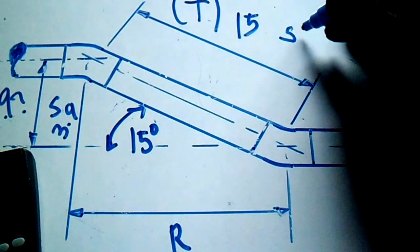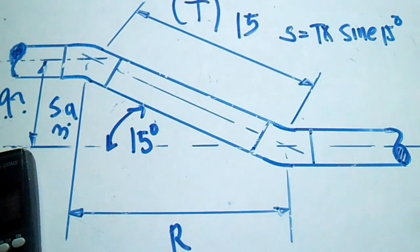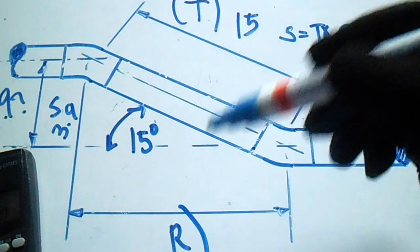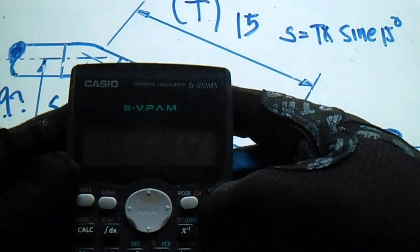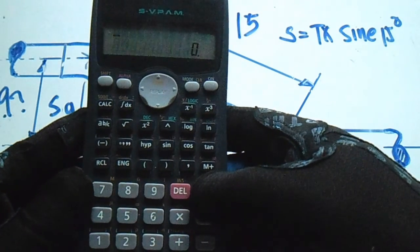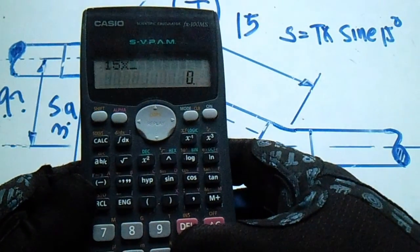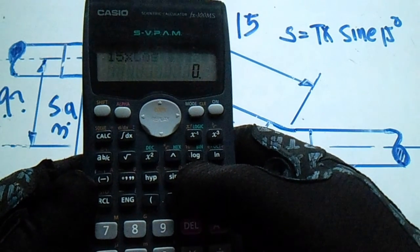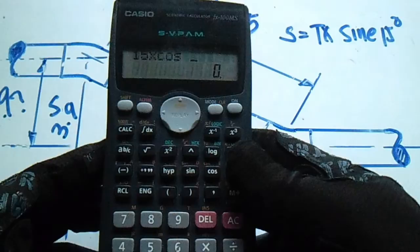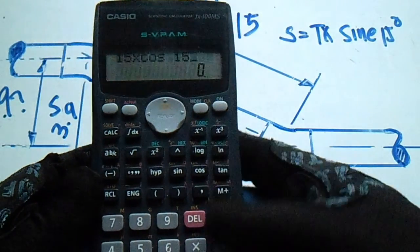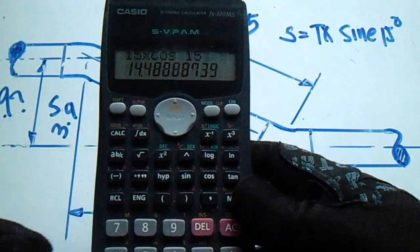So the formula to get the set is: set equals travel multiplied by sine 15 degrees. Now we will compute the run. Same formula, same procedure — but just change it to cosine to get the run. So 15 multiply by cosine, and our answer is 14.4.